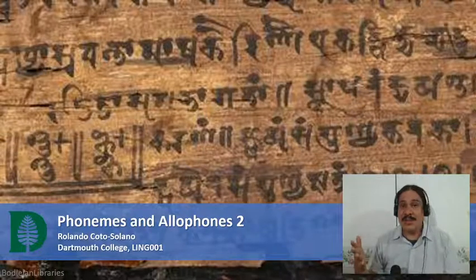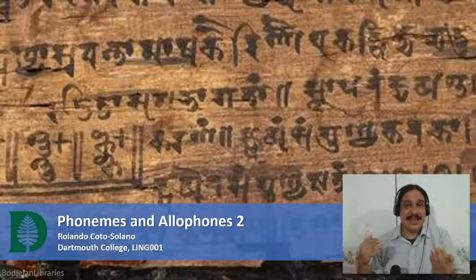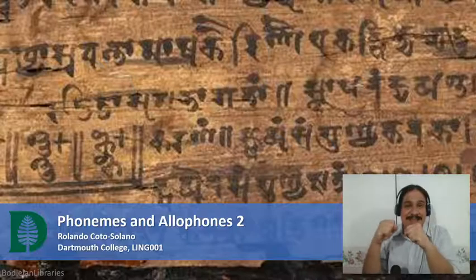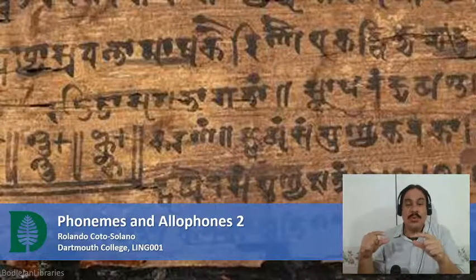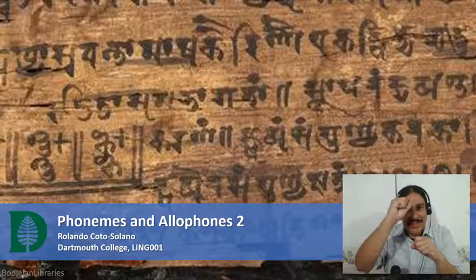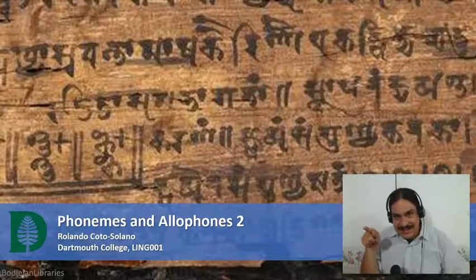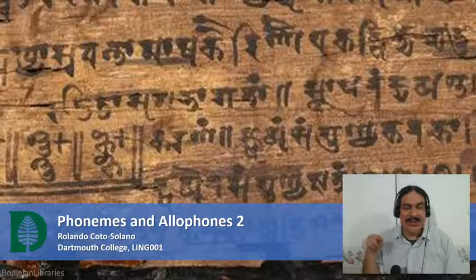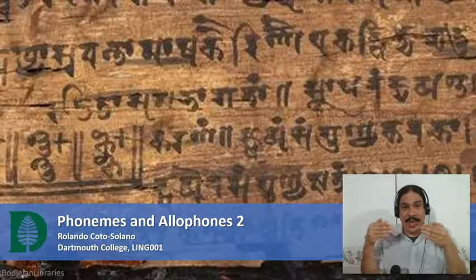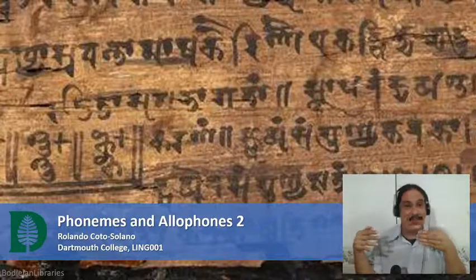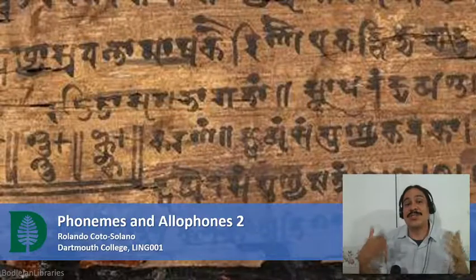However, the same sounds can be classified differently in other languages. In Korean, the sounds s and esh were actually two different personalities of the same mental representation — two allophones of the same phoneme. We only saw esh when it was followed by the sound e, as in shigan meaning 'our,' and everywhere else we saw the s. These two were allophones, and whenever we saw one, we never saw the other. So English and Korean organize these two sounds differently.